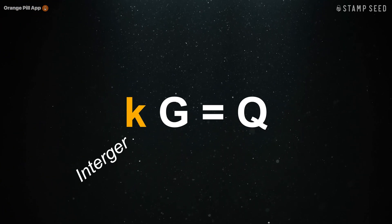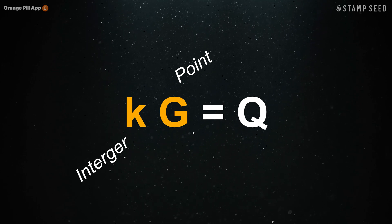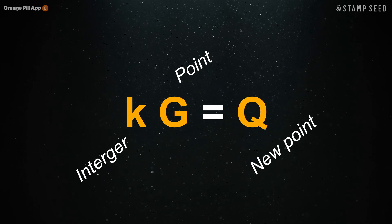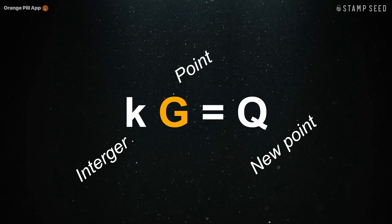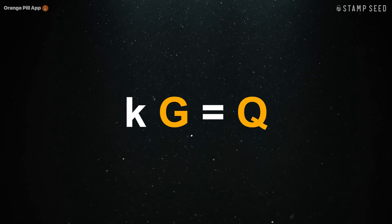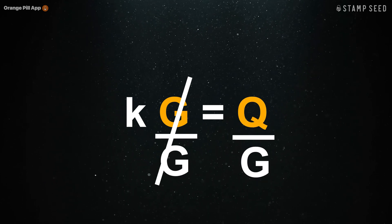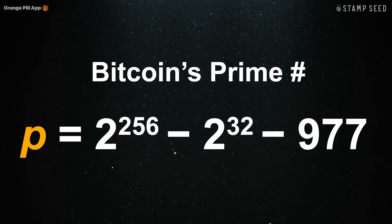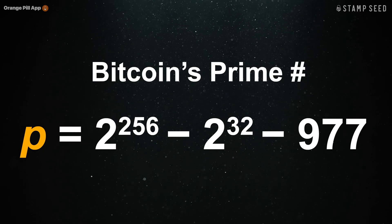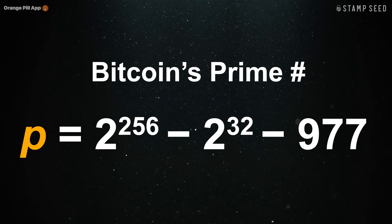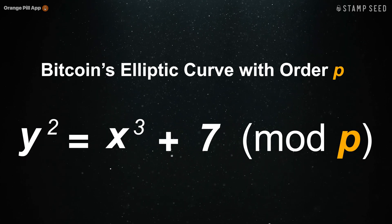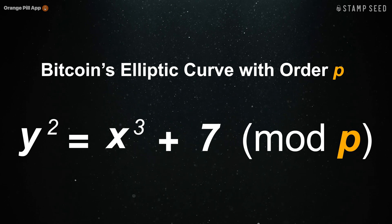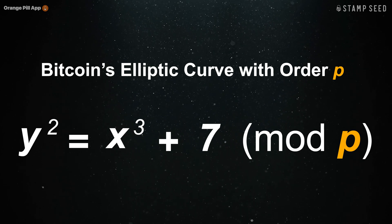Meaning, if we know the integer and point, we can multiply them and produce a solution. But what if we only have the point and the solution? We could simply use algebra and divide the solution by the point to get the integer, right? The answer is yes and no. If the order — meaning the maximum number like 12 for a clock — is a prime number, then certain theorems can be used to divide efficiently. However, theorems become increasingly less able to divide numbers as the order gets larger, because computers solve division of these numbers through trial and error.